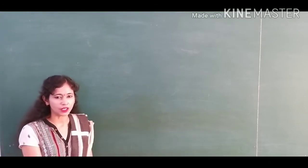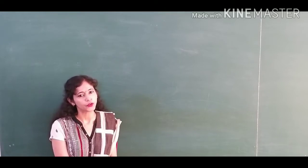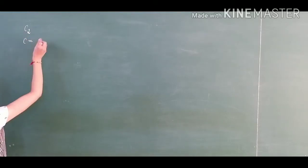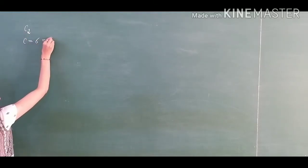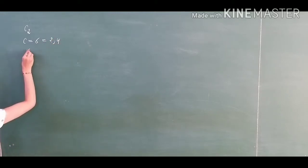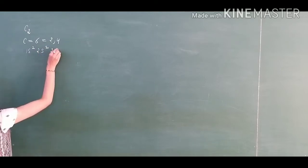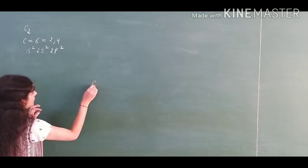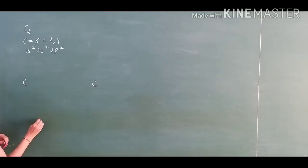Today we will discuss MO diagram of C2. Write the atomic number of carbon, this is 6. Electronic configuration is 2, 4, or in S3DF notation: 1s², 2s², 2p². We have to make two atomic orbitals of carbon, so 1s, 2s, and 2p we will make.